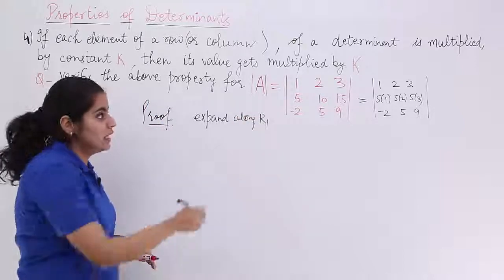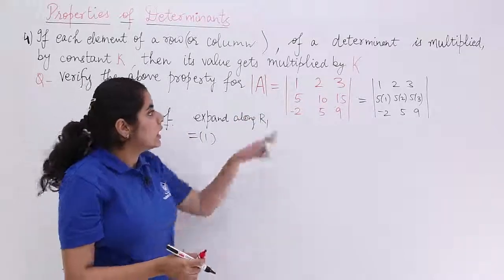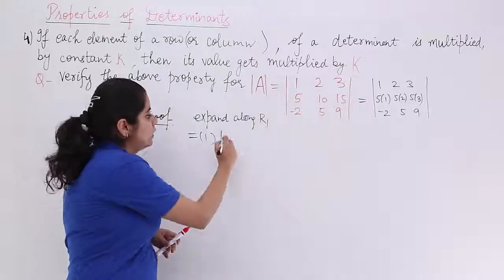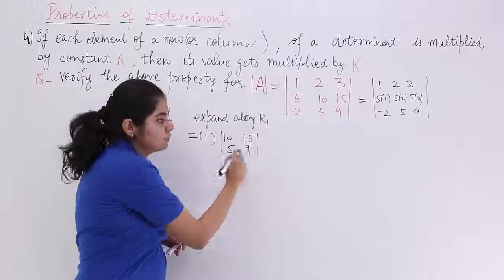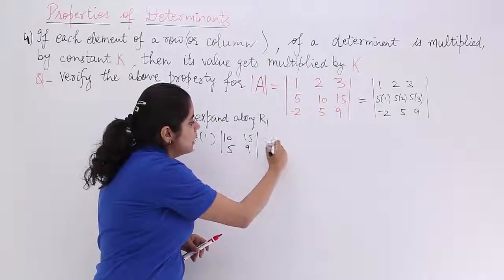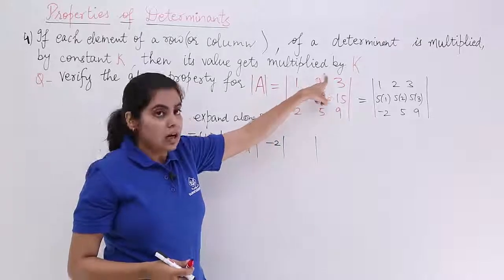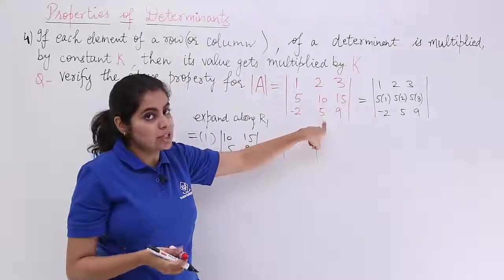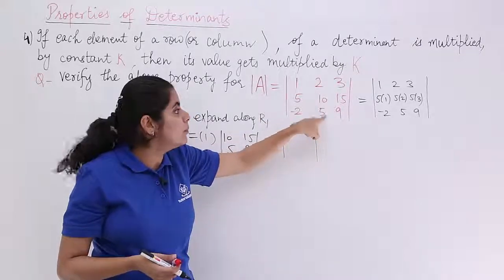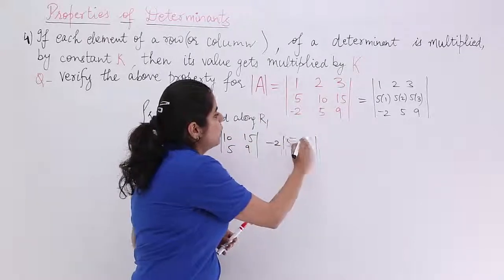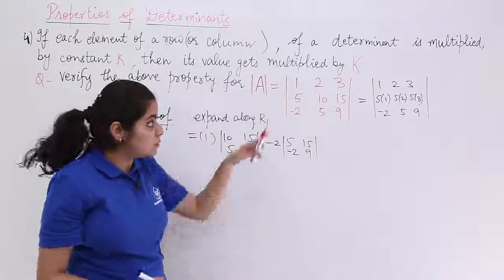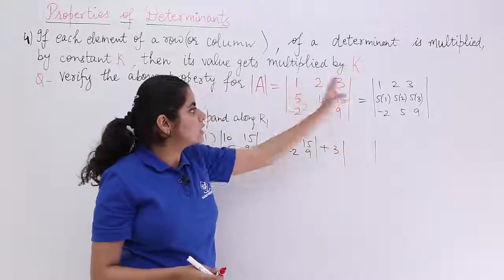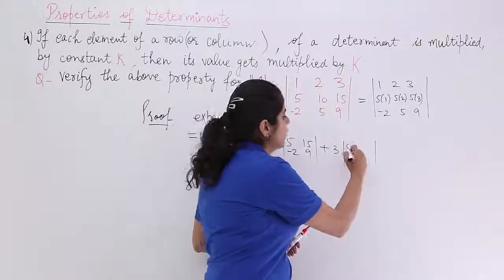Expanding along row 1 means writing 1, then ignoring the first row and first column, you have a sub-determinant which has 10, 15, 5, 9. Then is minus 2. Exclude this column, exclude that row, you have 5, 15, minus 2, 9. Last but not the least, you have plus 3. Exclude certain things. You have 5, 10, minus 2, 5.